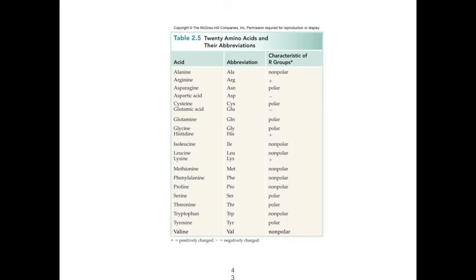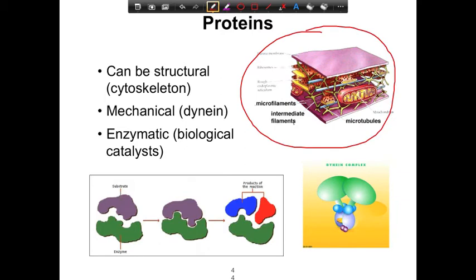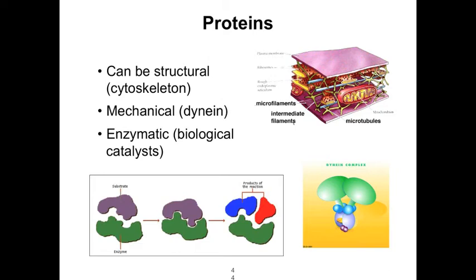Each of the 20 amino acid types has different characteristics in their R groups — some are nonpolar, some are polar, and some are even charged, meaning they can be either hydrophobic or hydrophilic. Proteins can be structural, such as components of the cytoskeleton including microfilaments, intermediate filaments, and microtubules. They can be mechanical, like dynein motors that move things along cytoskeletal elements inside the cell. Proteins also function as biological catalysts or enzymes — they run essentially everything in our body. Remember, DNA codes for proteins, thus proteins are everything.